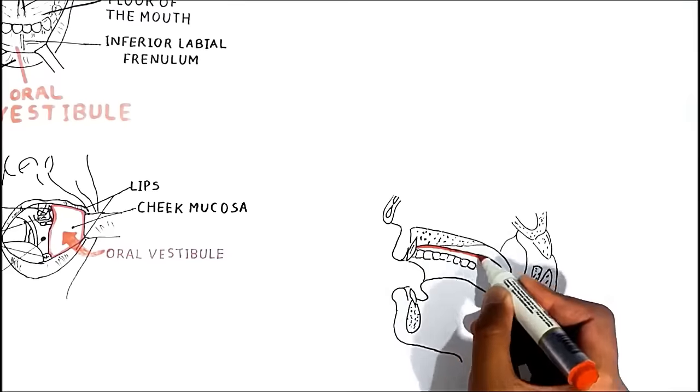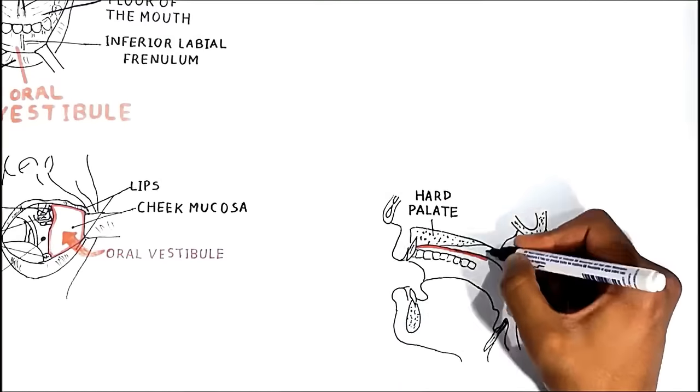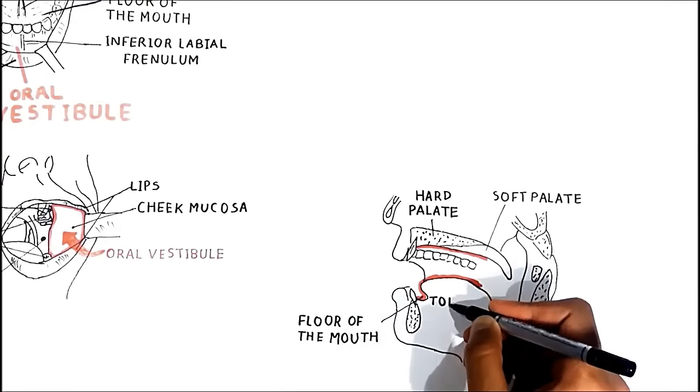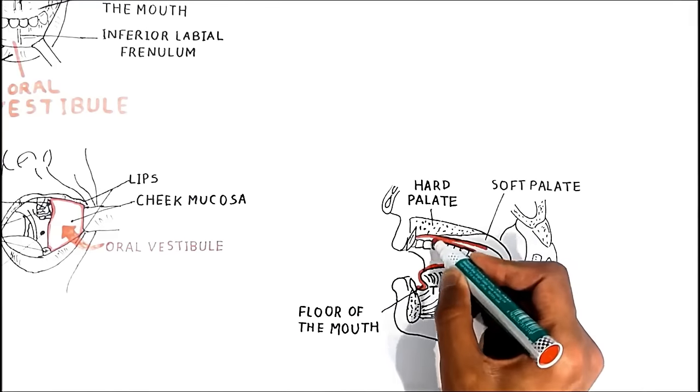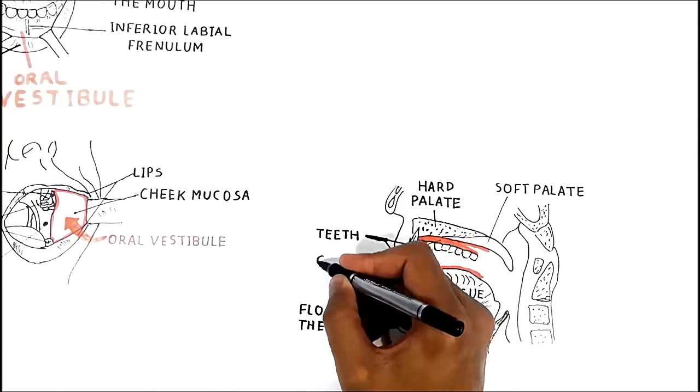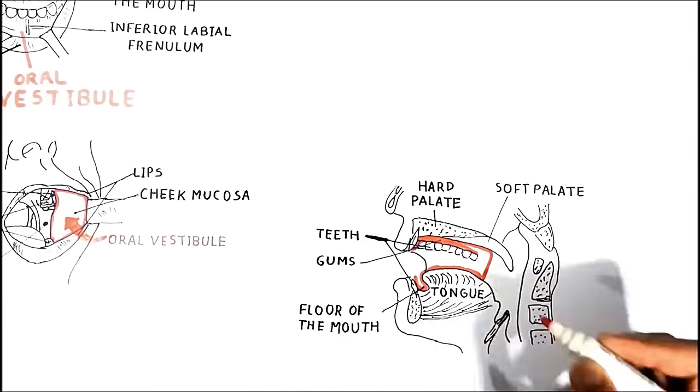The mouth proper is bordered by the hard and soft palate superiorly, the floor of the mouth with the mobile tongue inferiorly, and the teeth with the gums laterally and anteriorly, and the oral pharynx posteriorly.